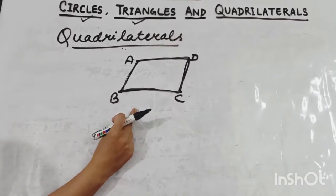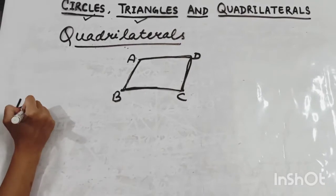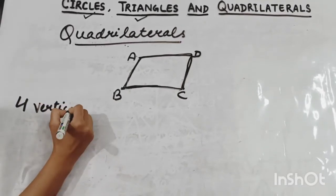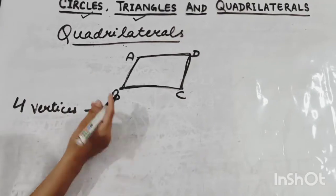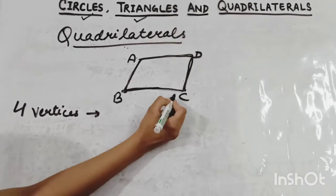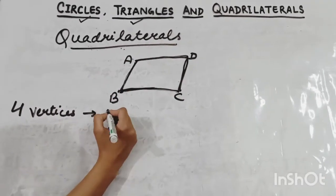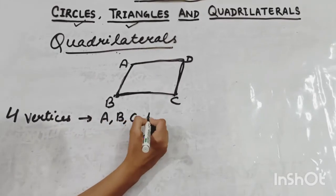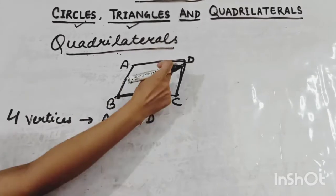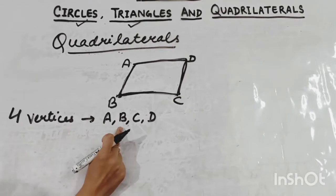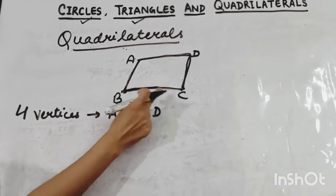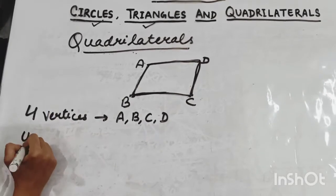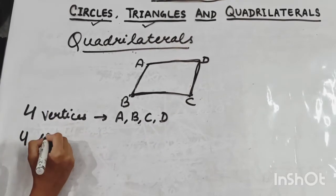In a quadrilateral, students, there are four vertices. Previously in triangles we studied it has three vertices, but a quadrilateral has four corner points — four vertices: A, B, C, D. These corner points are called vertices. And there are four sides in a quadrilateral.